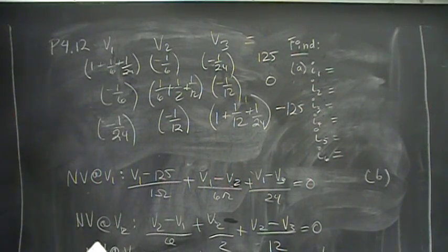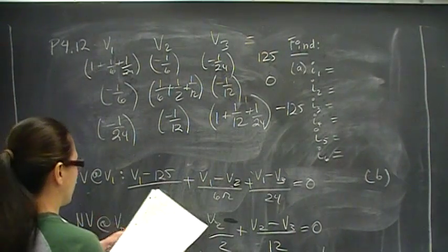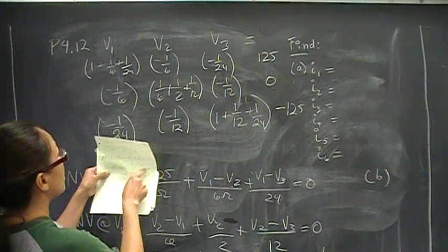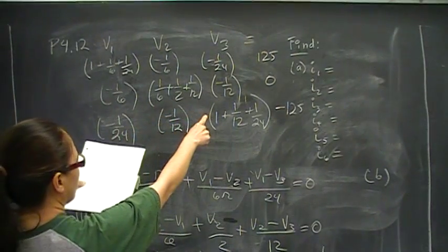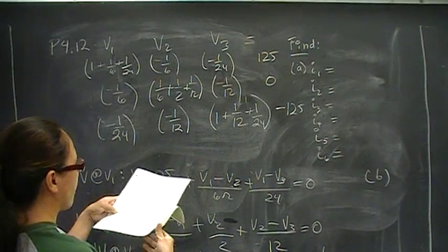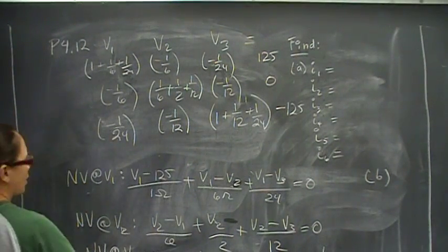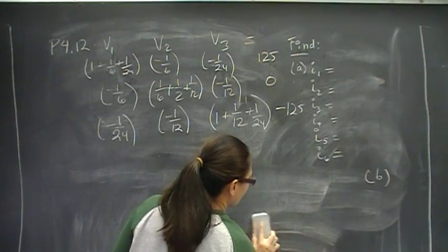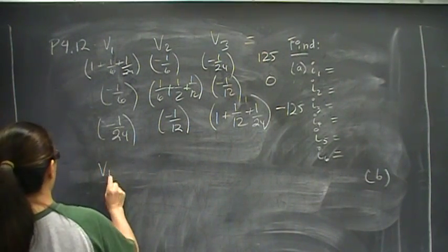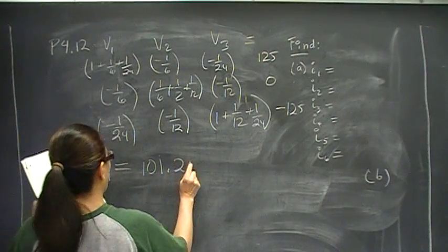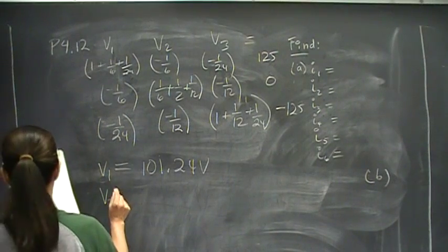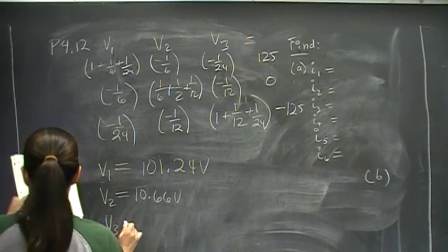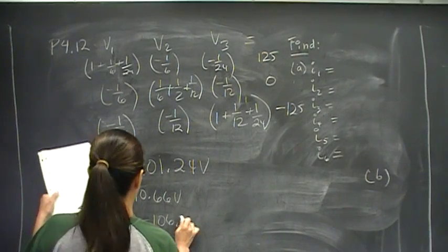Let me just verify that my matrix is correct. When you enter that into your calculator, the values that you should come up with are V1 is 101.24 volts, V2 is equal to 10.66 volts, V3 is equal to negative 106.57 volts.